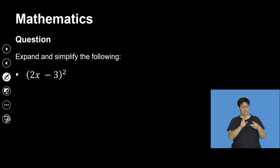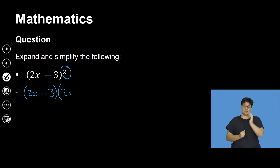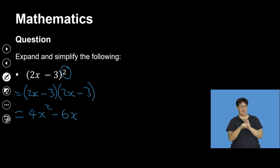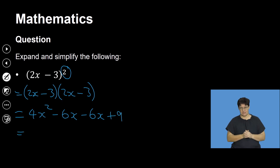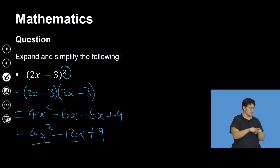The second example has to do with squaring a binomial. When we square something, it means multiplying the same binomial by itself. So (2x minus 3) squared becomes (2x minus 3)(2x minus 3). This equals: 2x times 2x gives 4x squared; 2x times negative 3 gives negative 6x; negative 3 times 2x gives negative 6x; negative 3 times negative 3 gives plus 9. Combining the like terms in the middle: 4x squared minus 12x plus 9. When you reach this point, you are done.